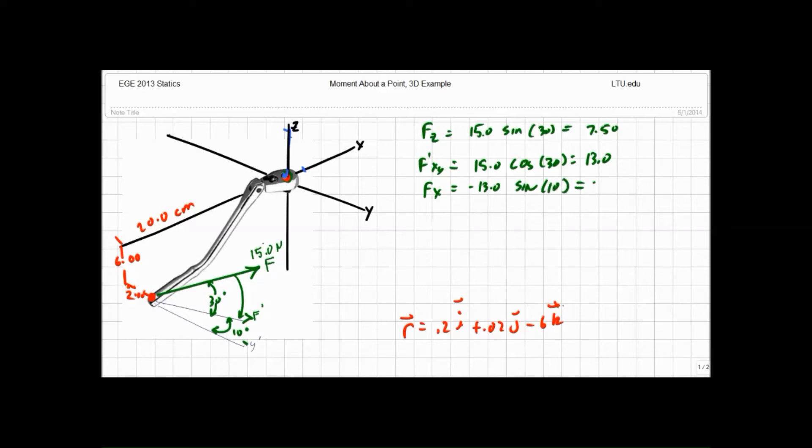equals 2.26 and fy equals 13.0 cosine of 10 and that's equal to 12.8